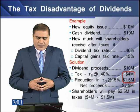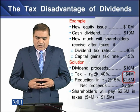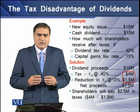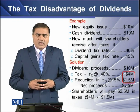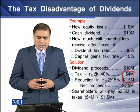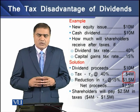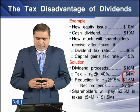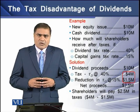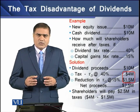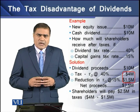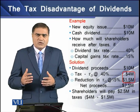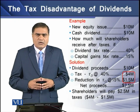To understand this, consider an example. The firm is raising new equity of $10 million and planning to pay this amount to shareholders as dividends, so the total cash dividend is also $10 million. The question is: how much will shareholders receive after taxes if the dividend tax rate is 40% and the capital gains tax rate is 15%? The dividend receipt is $10 million and the 40% tax on it amounts to $4 million.